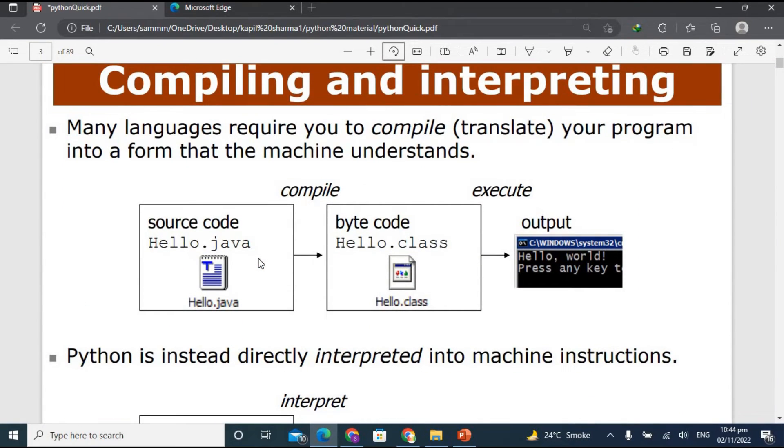So now let's move on and now we are going to study the most important thing in any programming language, which is compiling and interpreting. What is the concept of compilation and interpretation? Many languages require you to compile your program into the form that the machine understands. Compilation basically means translation.